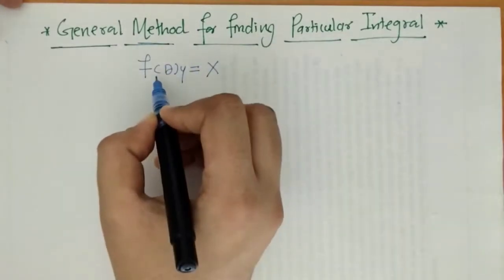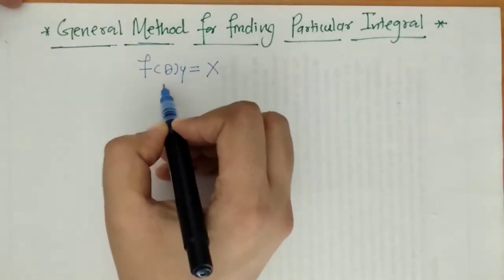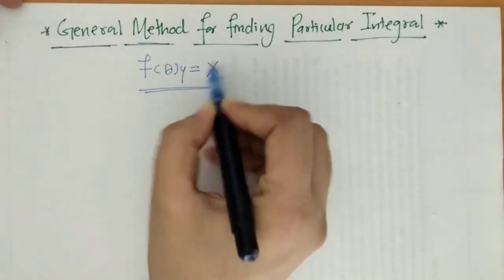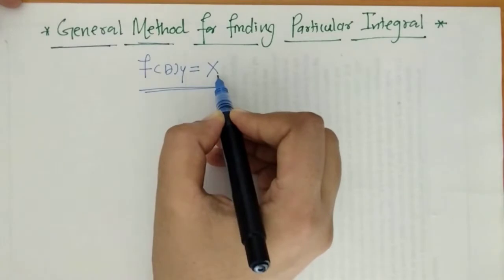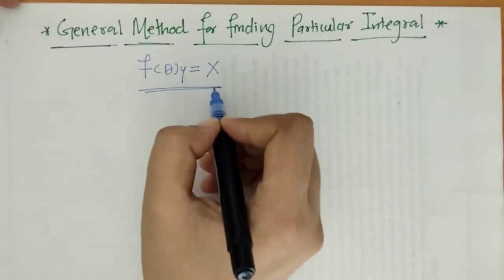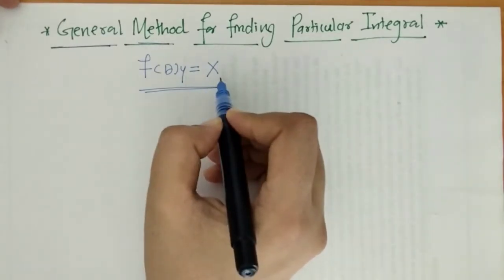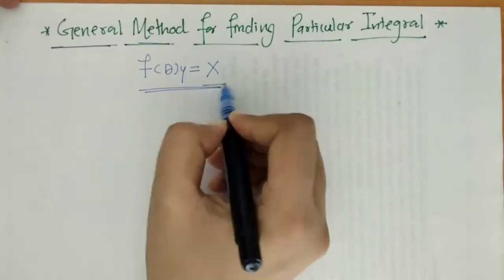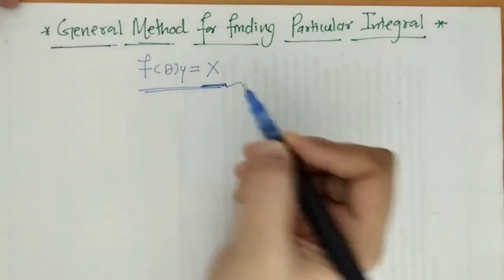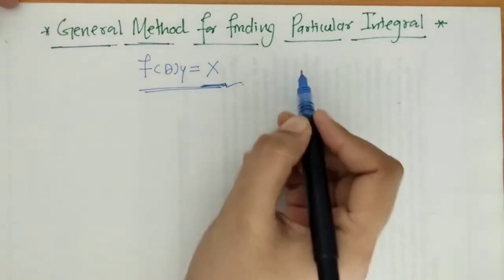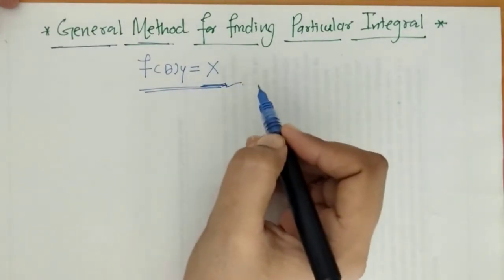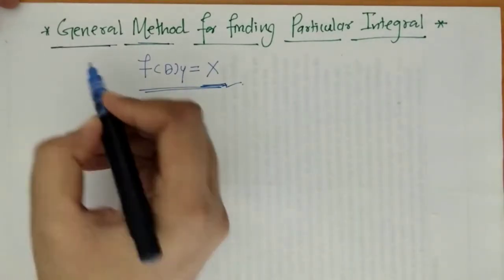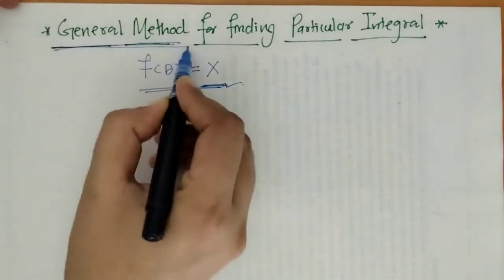We know that we have a linear differential equation of higher order with constant coefficients of this form, where X is the function of x. We have seen six different cases for finding PI depending on this X. If X is not given in the form of those six cases which we discussed in earlier lectures, then PI should be obtained by this general method.